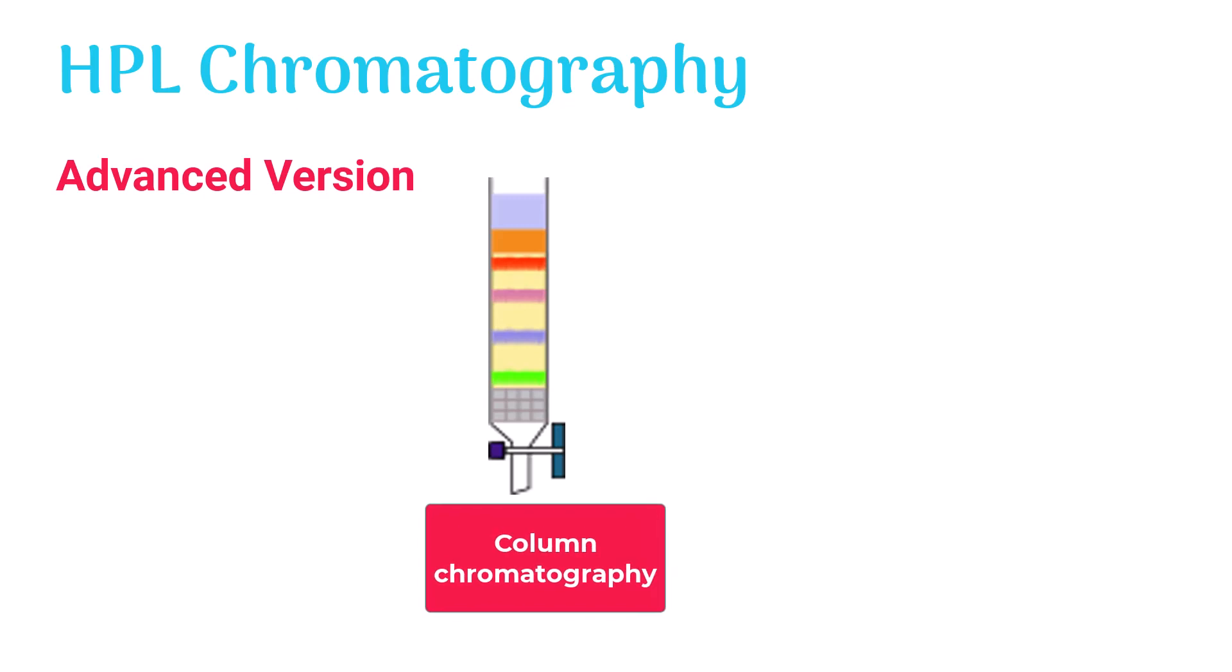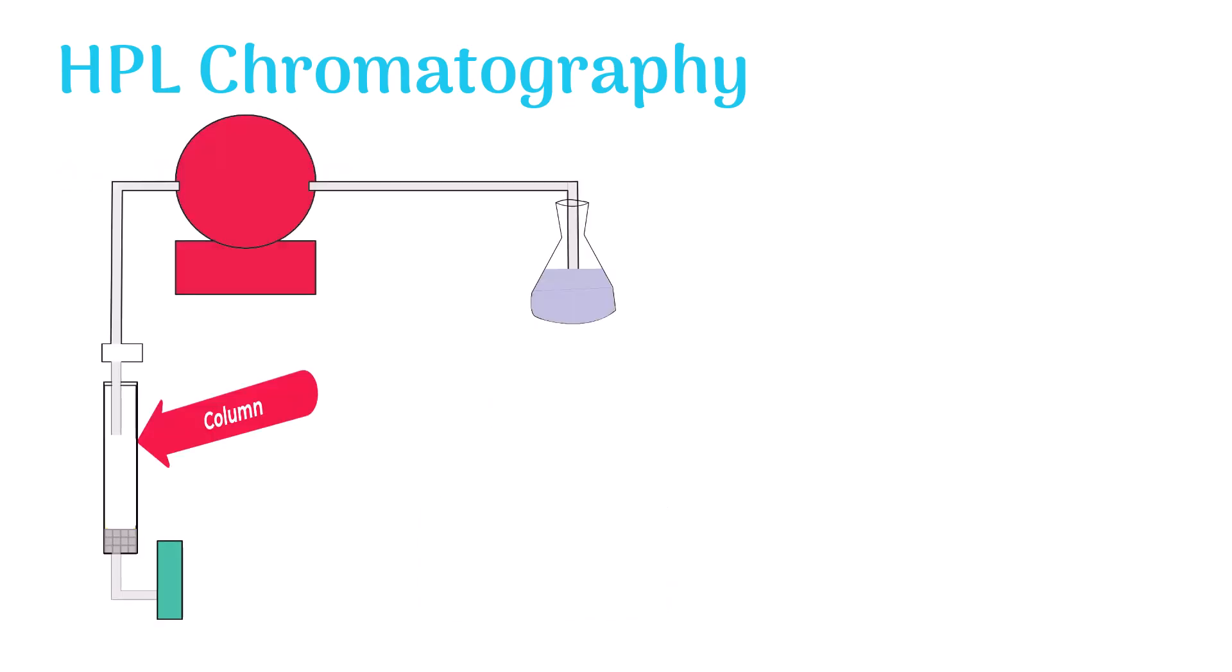In HPL chromatography, separation occurs inside the column. The stationary phase is placed inside the column.